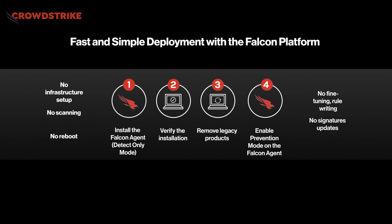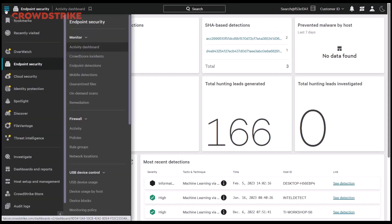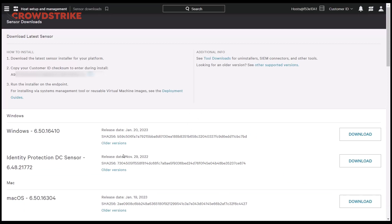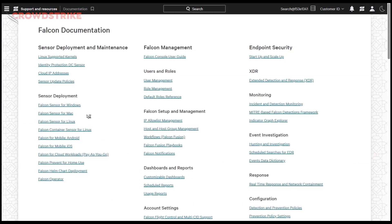We'll show you how this works with the example of deploying a sensor for Mac. We'll begin by installing the Falcon agent in detection mode, verifying the installation, and managing policies. Installing in detection mode ensures that the CrowdStrike agent won't create conflict with incumbent security solutions, enabling a seamless, frictionless transition. After we've verified the installation, customers can then move ahead with uninstalling their prior security agents and enabling the Falcon agent in prevention mode. After you've activated your CrowdStrike account, open the Falcon console, head to the Host Setup and Management menu, and select Sensor Downloads. The Downloads page will show you the latest available sensors based on operating systems of your endpoints. For detailed documentation on how to install the sensor, customers can also leverage our deployment guides at the top of the page.